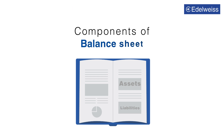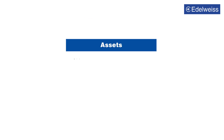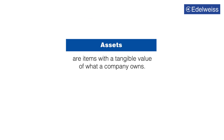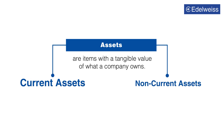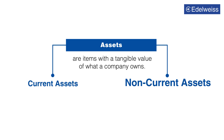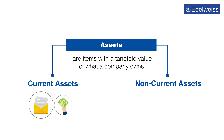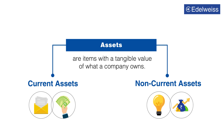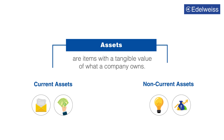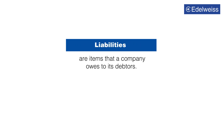Let's understand the broader components of a balance sheet. Assets are the items with tangible value of what a company owns. Assets are further divided into current assets and non-current assets. Current assets can be easily converted into cash, while it is difficult for non-current assets. Examples of current assets include accounts receivable and cash in hand, while intellectual property rights and investment in other companies are considered non-current assets.